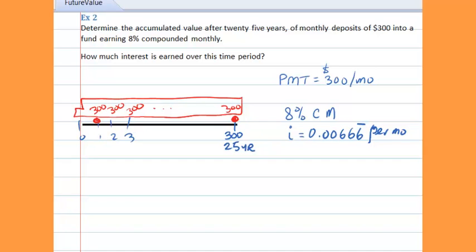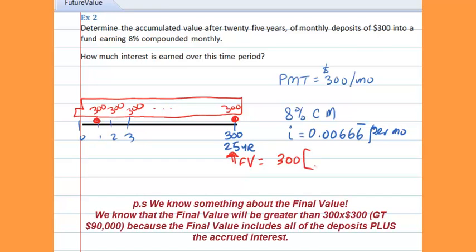Now we're asked to determine the maturity value or the accumulated value after the 25th year. In other words, we want to know what the final value is of this annuity. The final value is determined by computing the final value of $300 deposits with the accumulated interest.